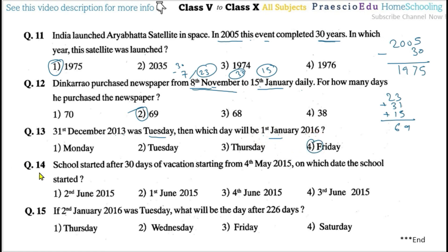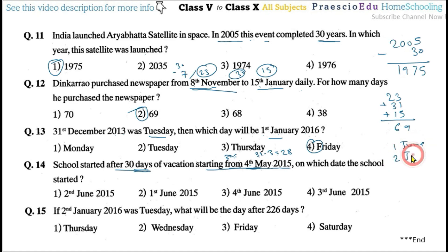Question number fourteen: School started after 30 days of vacation starting from 4th May 2015. On which day did school start? Vacation starts 4th May, so we count from 3rd May as previous day. Days remaining in May: 31 minus 3 equals 28 days. That covers day 1 to 28 in May. Days 29 and 30 are 1st and 2nd June. So vacation ends 2nd June and school starts 3rd June — option number four.